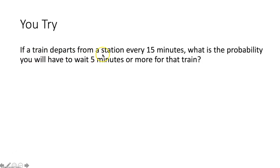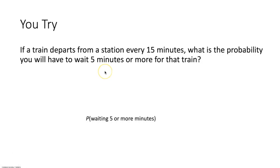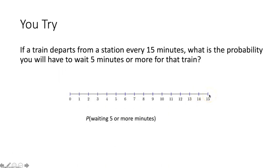If a train departs from a station every 15 minutes, what is the probability you have to wait 5 minutes or more? This is actually a length probability ratio question. We can draw a representation of your wait time using a line segment. The shortest wait time is 0 minutes, and if you arrive as the train is leaving, the longest wait would be 15 minutes. We'll call the 0-to-5-minute segment AB, and the 5-to-15-minute segment BC.